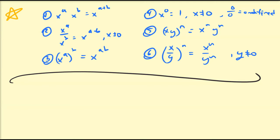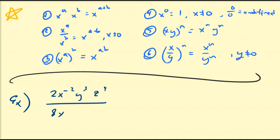Hello there. In the previous video we began our discussion of the basic properties associated to exponents and we discussed six primary relationships. So in this video we're going to start by looking at the example 2x^(-2) y^3 z^4, all over 8x^(-5) y^(-2) z^(-6), all to the power of minus 3. We're going to work through this example to review everything, and then extend these properties to radical expressions.